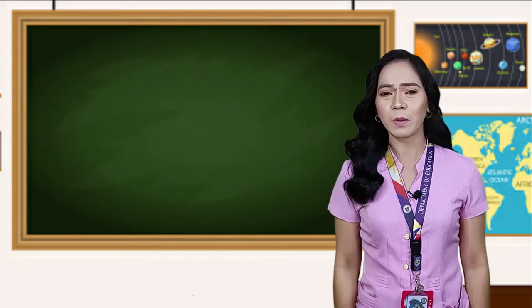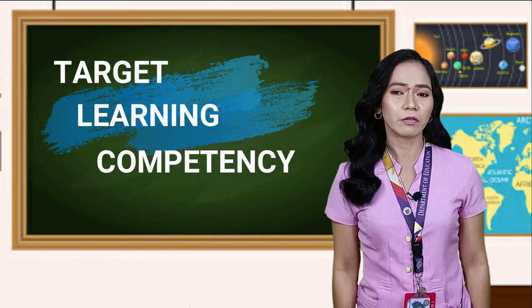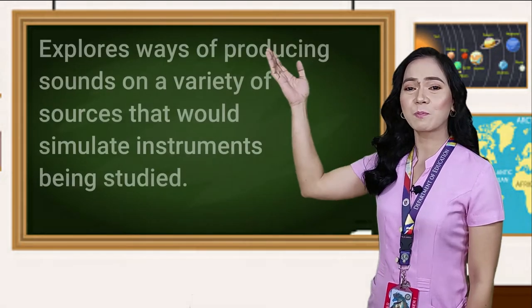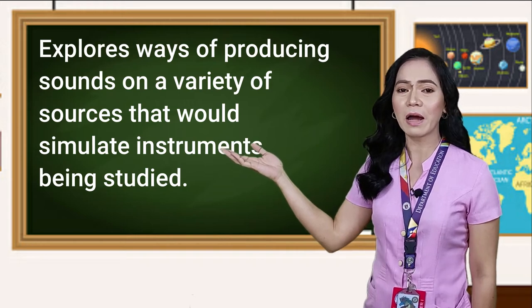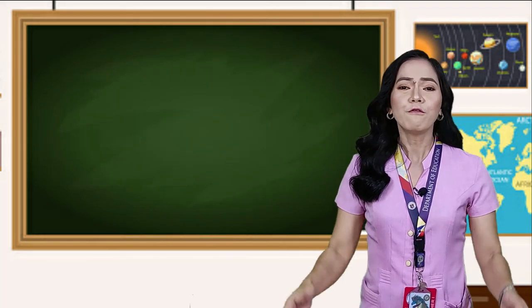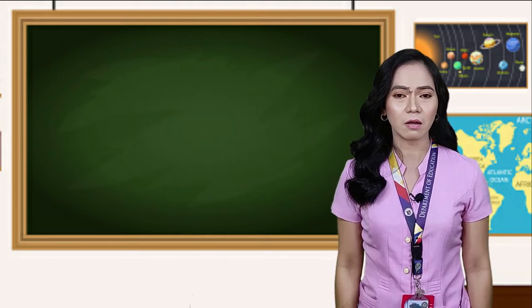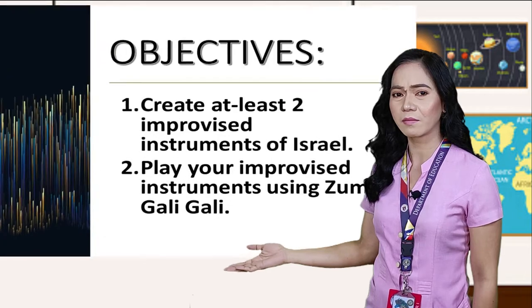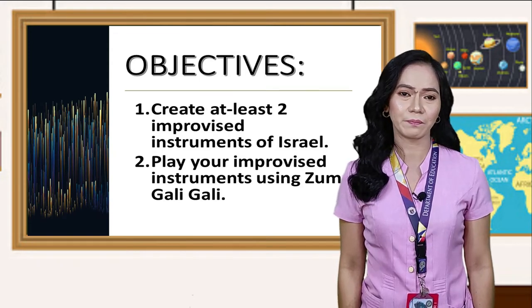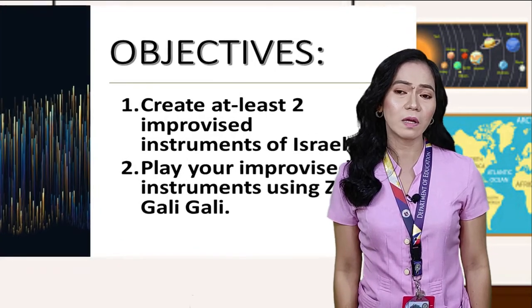To know more about the topic, we must also learn about our target learning competency that needs to be achieved at the end of this lesson, which is: explore ways of producing sounds on a variety of sources that would simulate instruments being studied. Here are the objectives: one, create at least two improvised instruments of Israel; and two, play your improvised instruments using Zoom Gali-Gali.